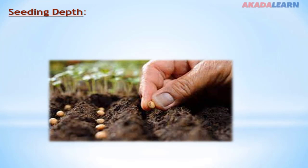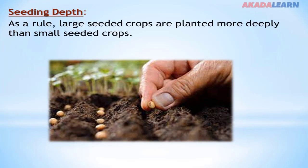Seeding depth. As a rule, large seeded crops are planted more deeply than small seeded crops. If small seeded crops are planted deeply, there is a possibility of them not germinating. And even if they should germinate, they may have some defects. So large seeds are planted deeper compared to small seeds.